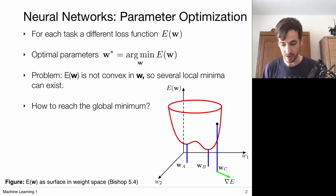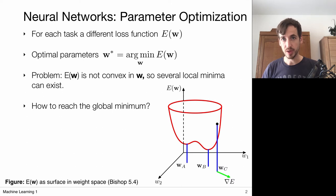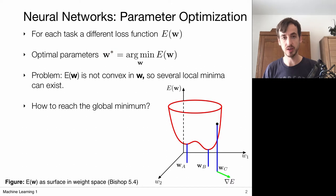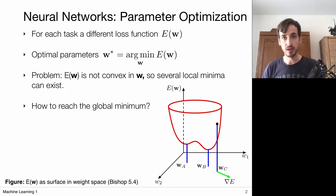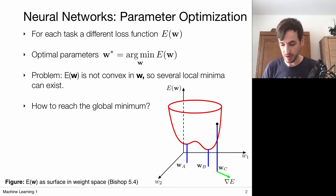Our objective is to find the most optimal set of model parameters w that really minimizes this error function. So far we have been lucky that our error functions were always convex, so that meant that if we apply some gradient descent method, we always end up with a globally optimal set of parameters. But now with neural networks with these complicated, highly non-linear functions, we no longer have this guarantee that our error function is convex, which means we can expect to observe several local minima in our error landscape.